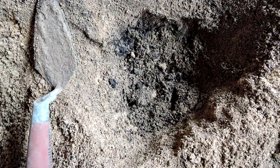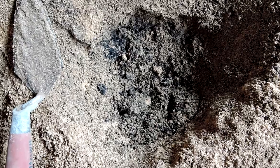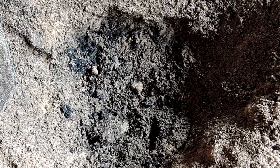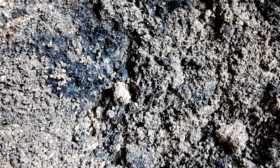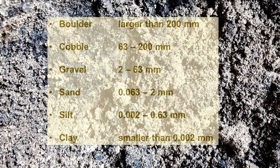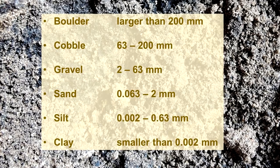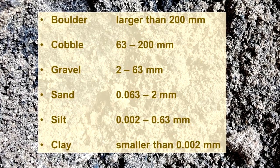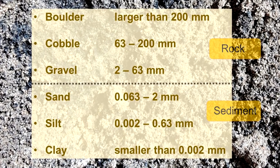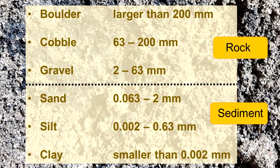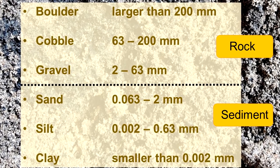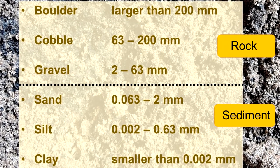Beginning with the geological particles, they can be described in their size or in their combinations of sizes. Individual pieces could be measured as clay, silt, or sand. Larger pieces or clasts are understood as rock particles of gravel, pebbles, cobbles, or boulders.